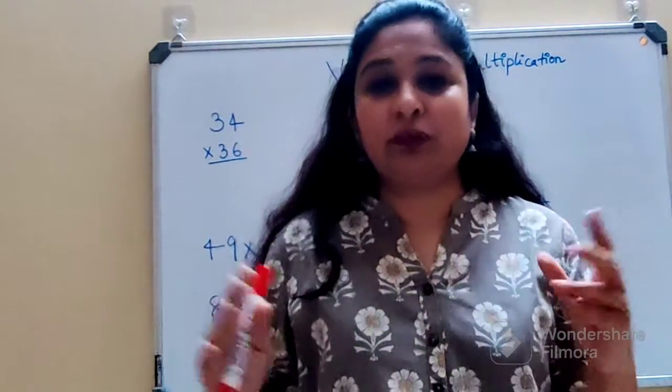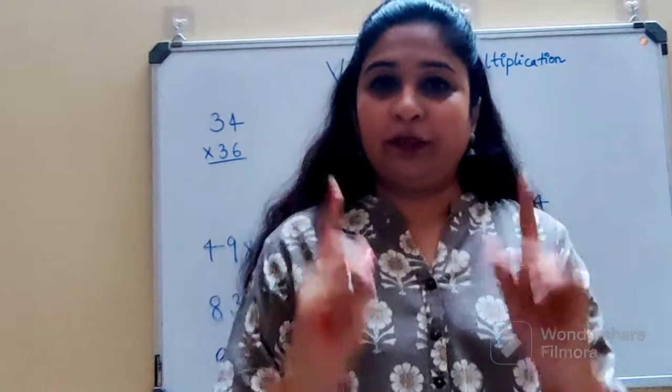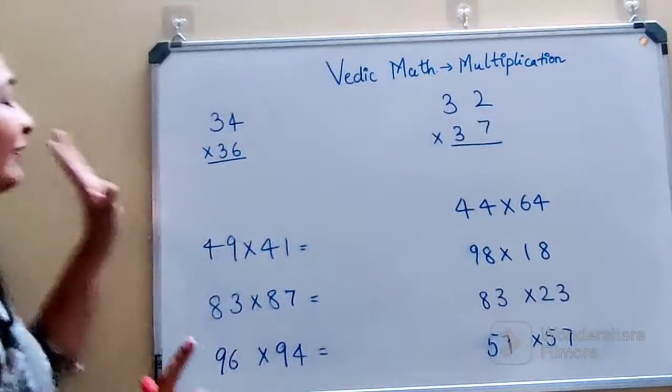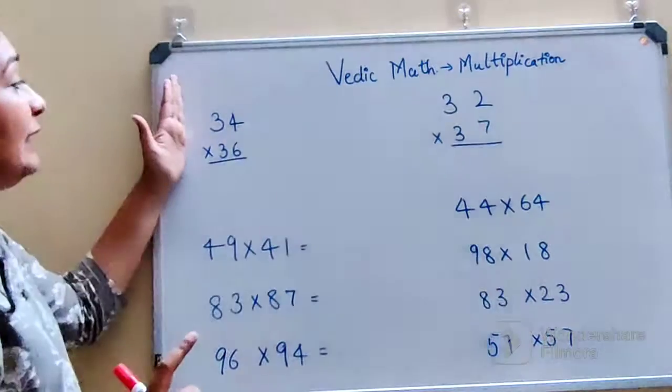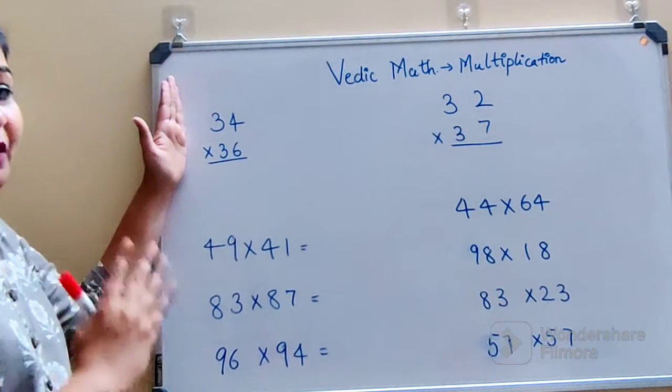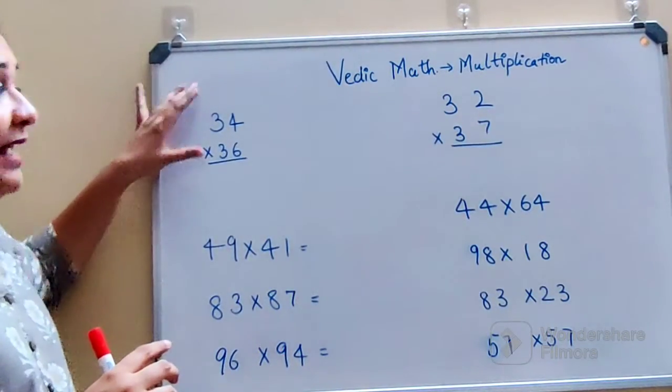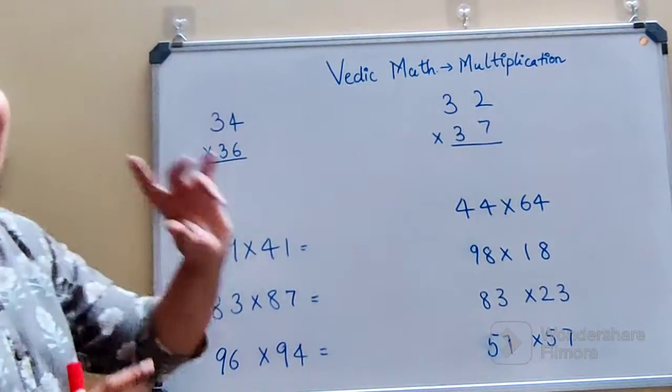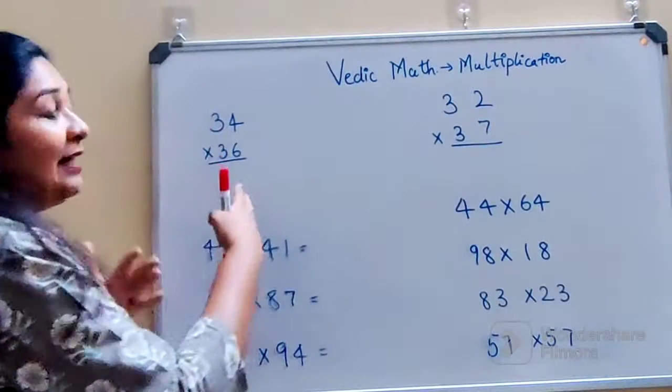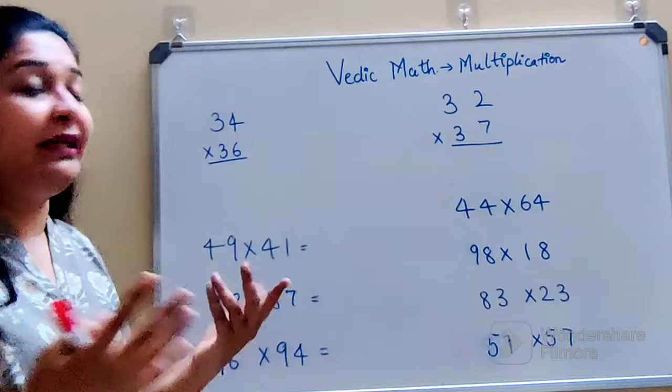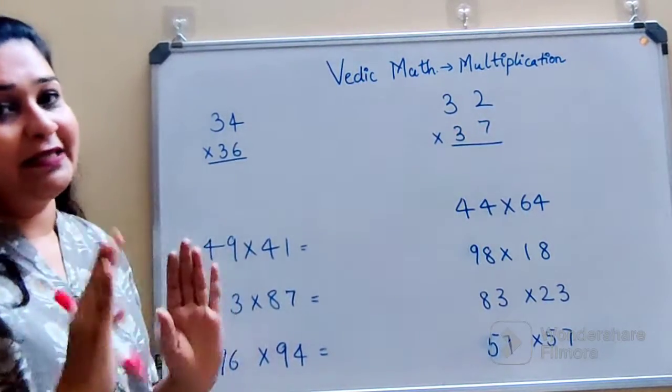Please understand, for any trick to work there are certain prerequisites you should always remember. The prerequisite for this trick is that the first digit of your multiplication question should be the same, and the last two digits should add up to 10. When they add up to 10, that is when you can use this particular trick, provided the first digit is same.